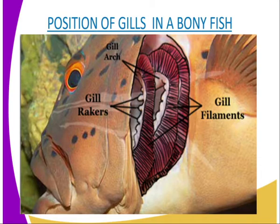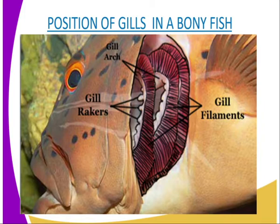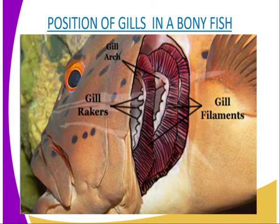The gills consist of a gill bar, the gill filaments, and also the gill rakers. The gill bar, or gill arc, is a long curved bony structure which provides a surface area for the attachment of the gill rakers and the gill filaments. Gill filaments are numerous and long to provide a large surface area for gaseous exchange, as you can see from our diagram.